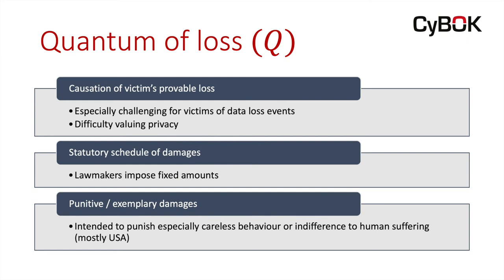Because of difficulty in calculating damages in some circumstances, occasionally lawmakers will simply write out a tariff of compensation under certain defined circumstances. This happens, for example, in the U.S. where certain types of copyright infringement can be subject to so-called statutory damages. Also, in the state of Illinois, when they passed their law concerning use of biometrics, violation of that law results in statutory damages of fixed amounts. Also, if you're going to be in contact with the U.S. legal system, you must take care to remember about the possibility for punitive or exemplary damages — special damage awards designed specifically to punish especially careless behavior or sometimes indifference to human suffering. Those types of awards can be many, many multiples of the underlying award for quantum of loss.